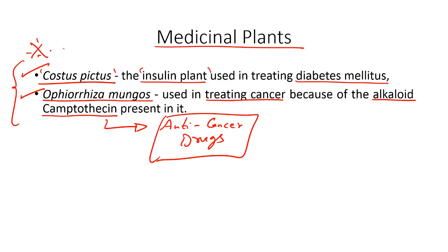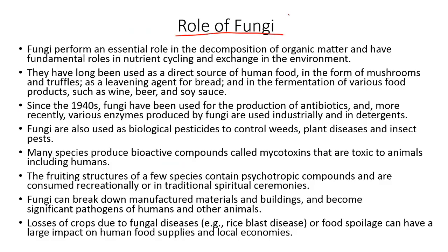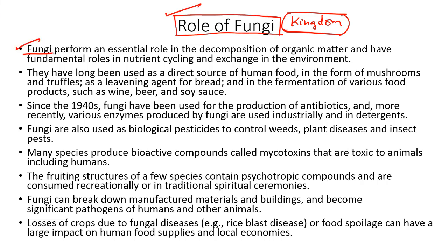Kindly note down these medicinal plants which can be relevant for prelims. Let us also talk about the role of fungi in the ecosystem. Just like animals and plants, fungi is classified as a separate kingdom, and it presents a number of advantages and disadvantages with regard to its role in the ecosystem. A fungi is not only a heterotroph but it can also act as a decomposer. It secretes certain enzymes which play a major role in the decomposition of organic matter, and as a result fungi plays a primary role in nutrient cycling and the exchange of nutrients in the environment.